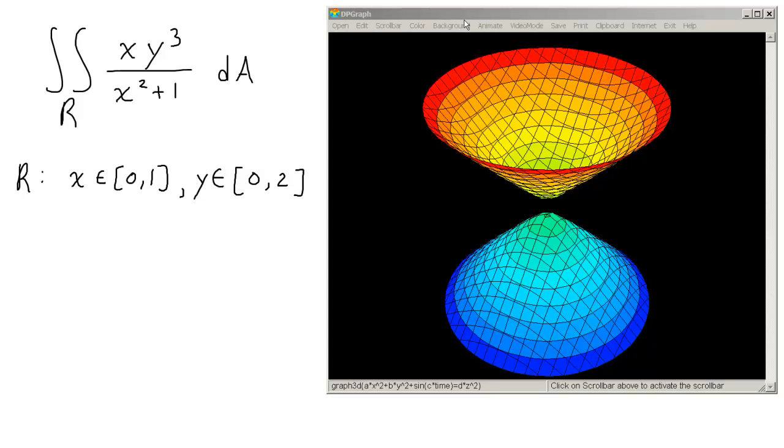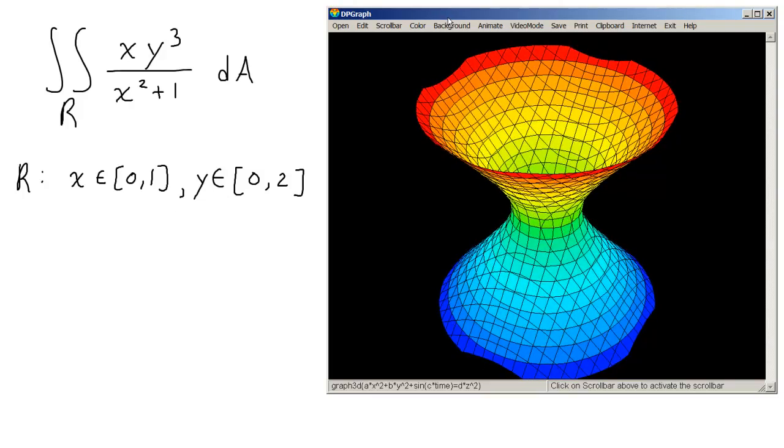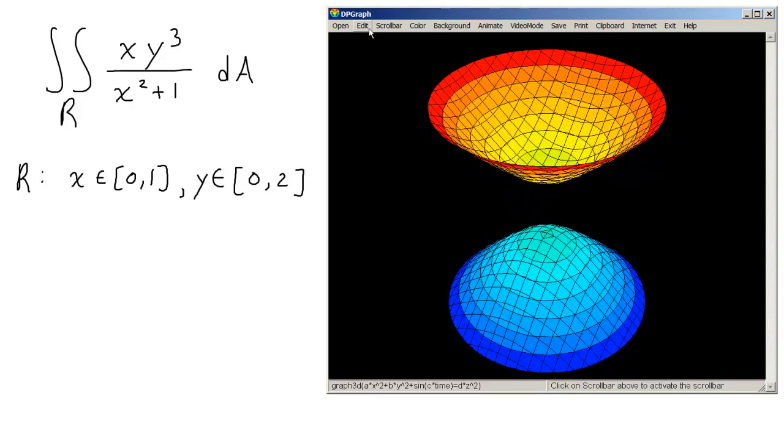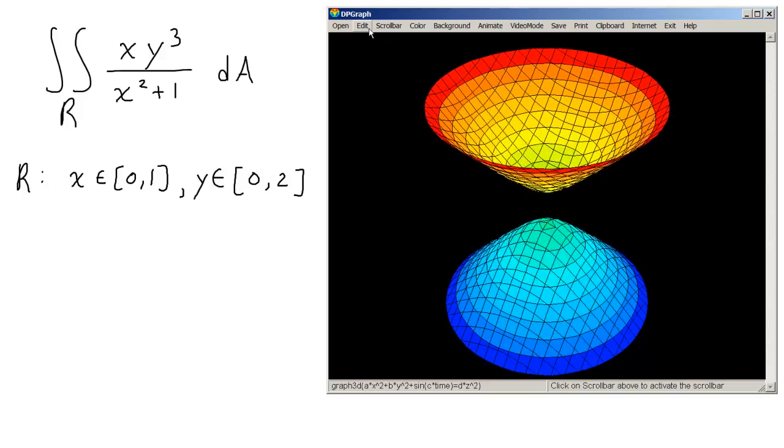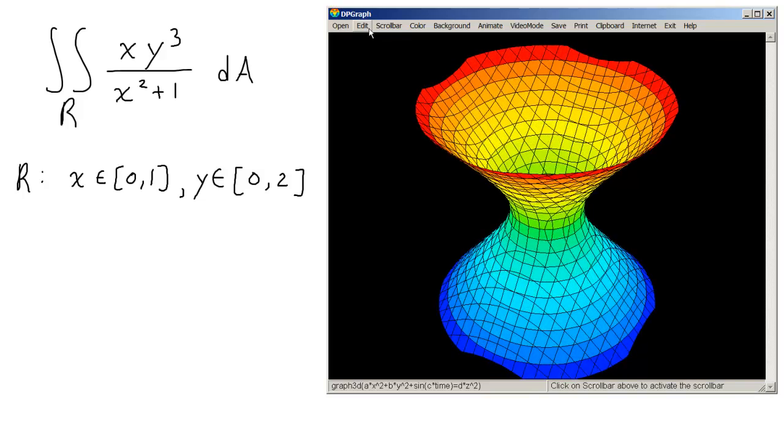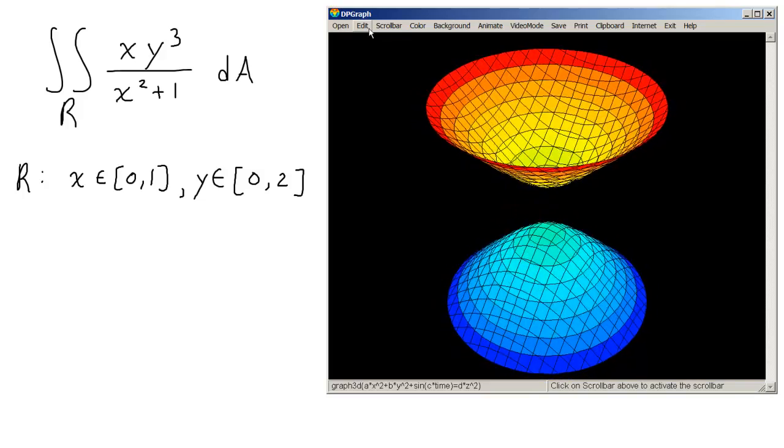In this video, we're going to find the volume under this curve, x times y cubed over x squared plus 1, over the rectangle x in the range 0 to 1, y in the range 0 to 2. These are both closed sets. The first thing I'm going to do is show you how to visualize this using this great program called DPGraph. Unfortunately, DPGraph is only available for Windows computers. If you don't have it, there are a variety of other ways. I just find this to be the best and most colorful way of doing it.